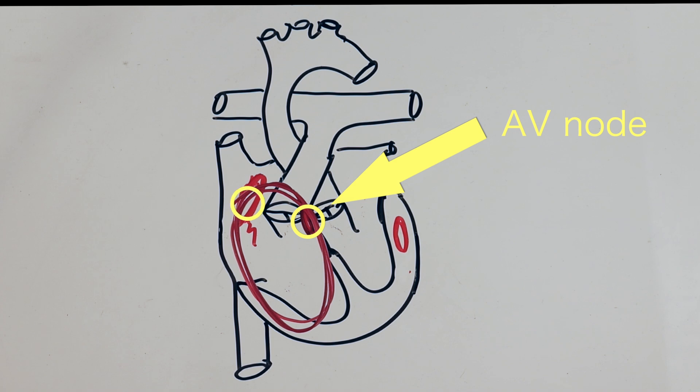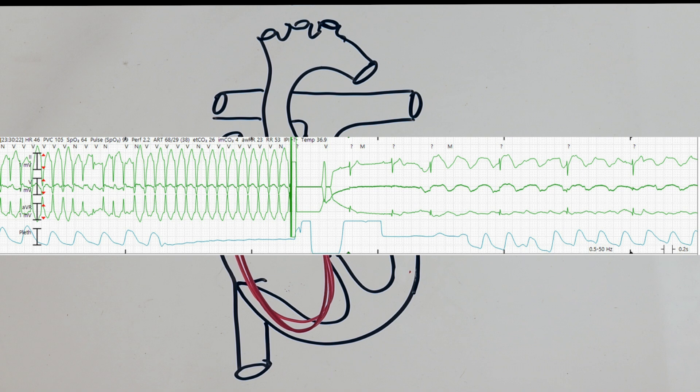Another disadvantage of adenosine is that it only works on re-entrant tachycardias that involve the AV node. If your patient has atrial flutter, adenosine will not terminate it. Defibrillation is also an option to terminate a re-entrant arrhythmia, but is painful and will require sedation.